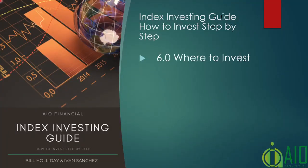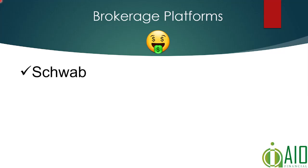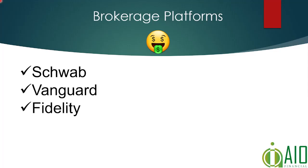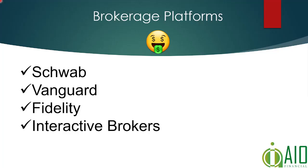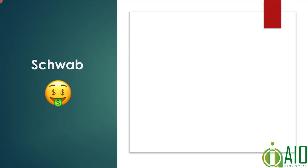In this chapter we're going to go over where to invest and how to invest. This video we're going to talk about where to invest — some of the common, largest platforms for opening accounts and holding your assets are Schwab, Vanguard, and Fidelity. We also like Interactive Brokers and TradeStation for non-US investors.